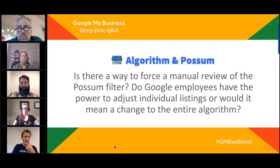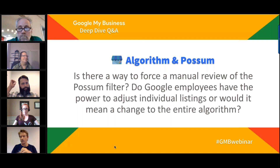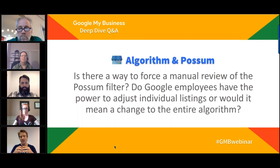Next question: Is there a way to force a manual review of the POSSUM filter? Do Google employees have the power to adjust individual scenarios or listings, or does any change require an algorithm-level update? Given Joel's time at Google, he's best placed to address this.